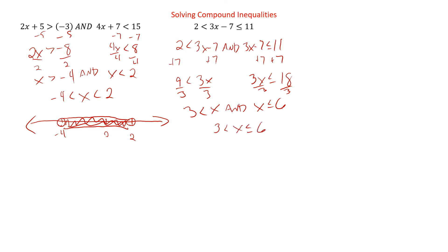I know some people try to solve without splitting it up, just trying to work both things at once. It's really easy to make mistakes that way — I would not recommend it, at least not at this point. To graph this one, we have zero, three, six. It's an open circle on three, a closed circle on six, and everything in the middle.